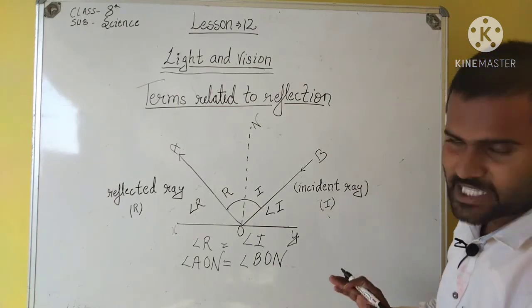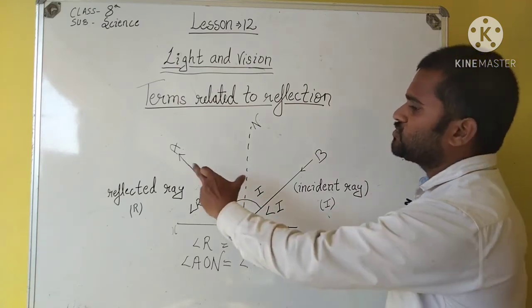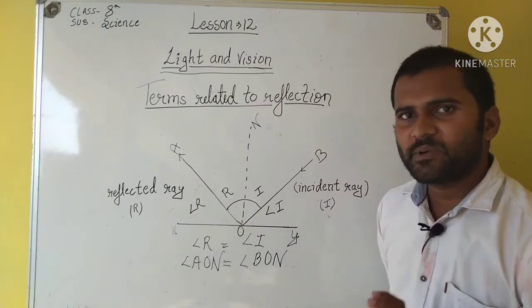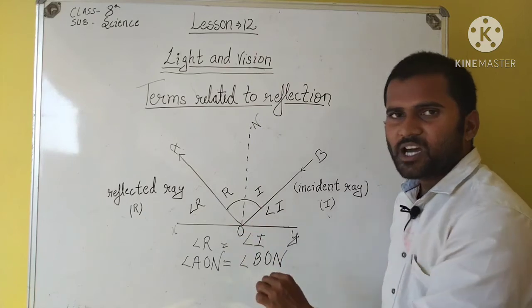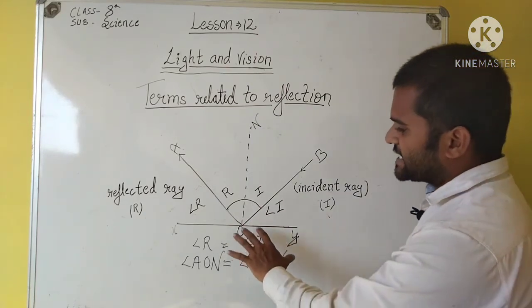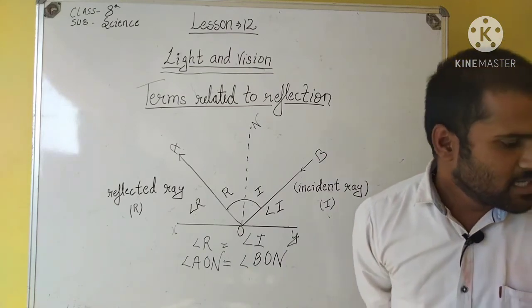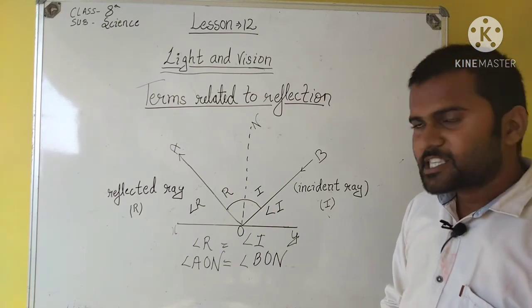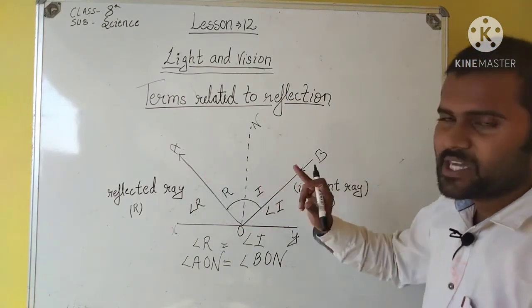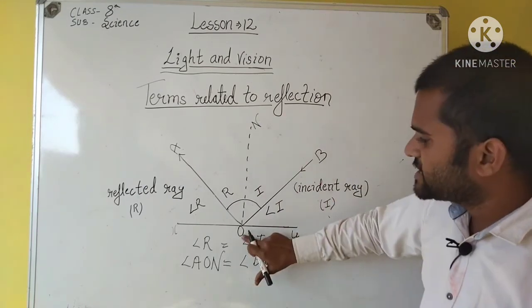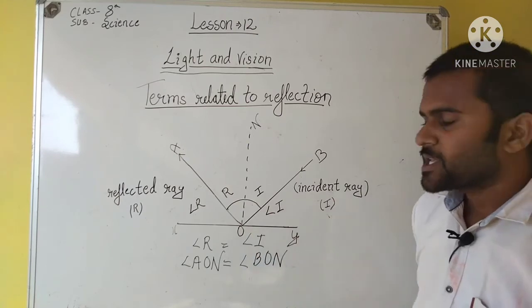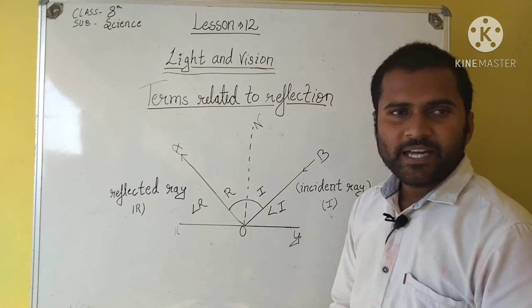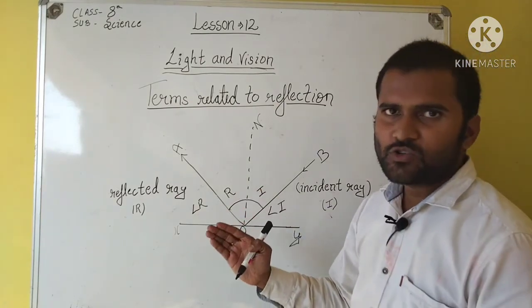And the next one is the second law. The reflected rays and the incident rays which meet at the origin, the point where they meet. The incident rays, the reflected rays and the normal at the point of the incident lie in the same plane. These three points in the same plane.